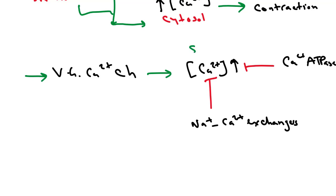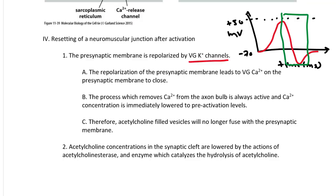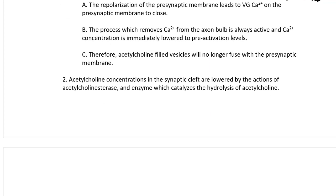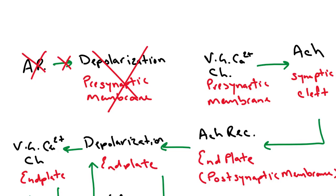Once the voltage-gated calcium channel activation arrow is gone, only the removal processes are working — the negative feedbacks on cytosolic calcium — so calcium concentrations in the cytosol immediately crash. Because the removal process is never deactivated, acetylcholine-filled vesicles will no longer fuse with the presynaptic membrane, and acetylcholine is no longer released into the synaptic cleft.